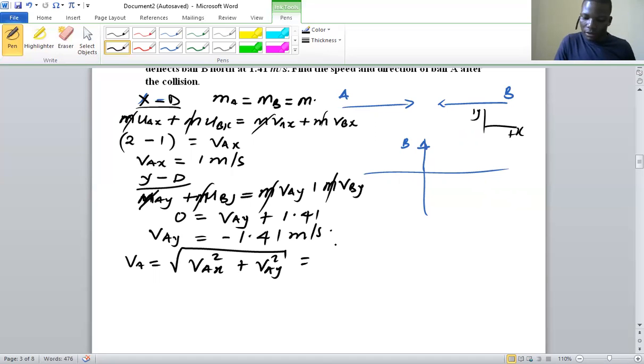We plug in 1 m/s squared plus (-1.41)² and once we compute, we get the magnitude being 1.73 m/s.